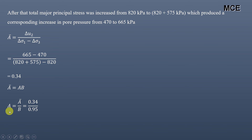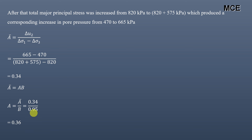Since A-bar equals A times B, we already know B is 0.95, so A equals A-bar divided by B: 0.34 divided by 0.95, which gives A equal to 0.36. So the values of Skempton's pore pressure coefficients for this test are: A = 0.36 and B = 0.95. This is how you can calculate Skempton's pore pressure coefficients from the results of a triaxial test.